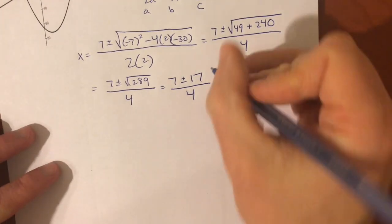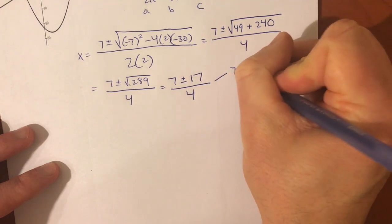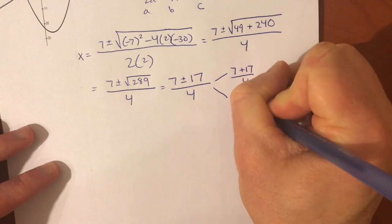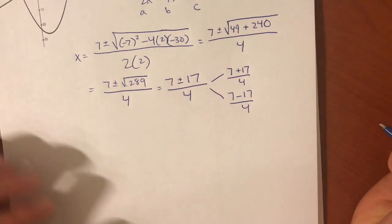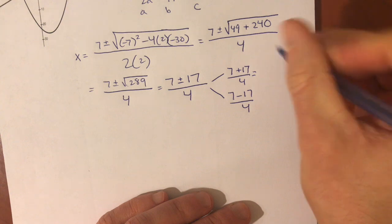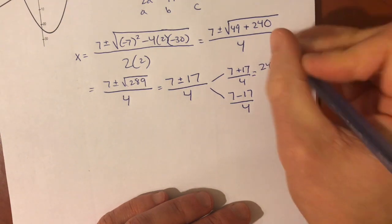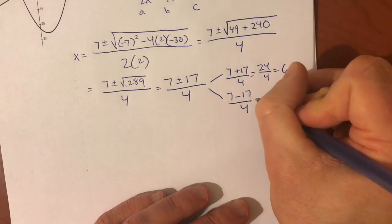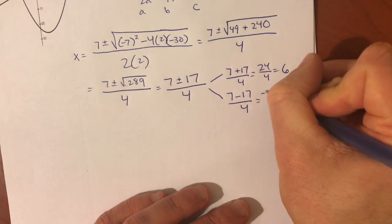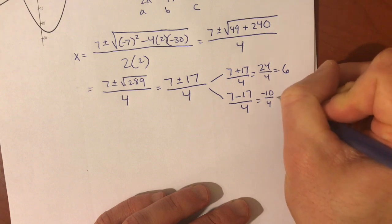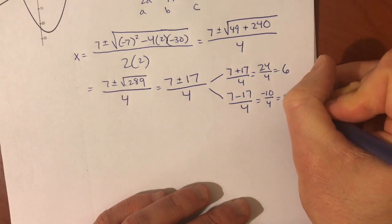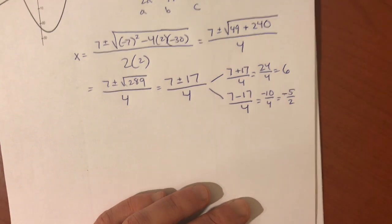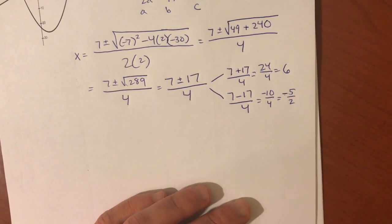But, it still does give you two answers. That means 7 plus 17 divided by 4, and 7 minus 17 divided by 4. 7 plus 17, that's 24, divided by 4, 6. 7 minus 17, that's negative 10, and divided by 4, that is not an integer. So, we get negative 5 halves, or negative 2.5 if you want to use a decimal.